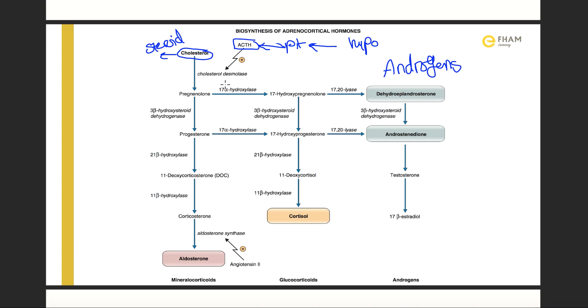ACTH stimulates cholesterol desmolase. But before that, when stimulus is coming, cholesterol which is in the cell in vesicles goes to the mitochondria. In mitochondria there is some modifications of cholesterol to enhance cholesterol desmolase action on cholesterol, which is done by cytochrome p450.